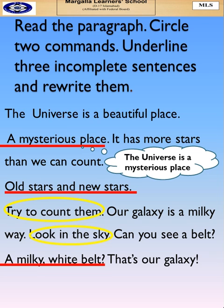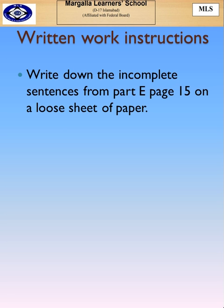The complete sentence will be: 'The universe is a mysterious place.' Universe will be the subject and 'is' will be the verb that we are talking about. Now what you have to do is write down the remaining incomplete sentences from part E, page number 15, on a loose sheet of paper. That's all for today.